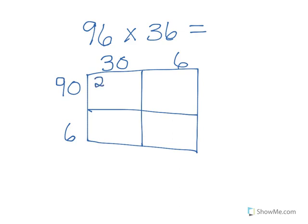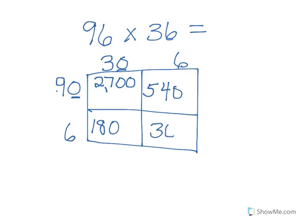3 times 9 is 27, and 2 zeros, so 2,700. Next is 90 times 6: 6 times 9 is 54, and 1 zero, so 540. Then 30 times 6: 6 times 3 is 18, and 1 zero, so 180. And my last box is 6 times 6, which is 36. Now I just need to add them all up.